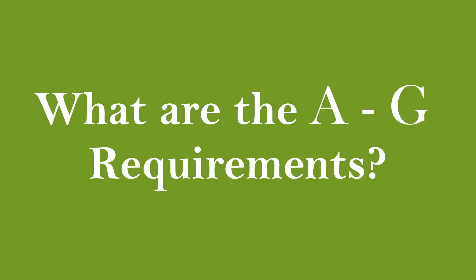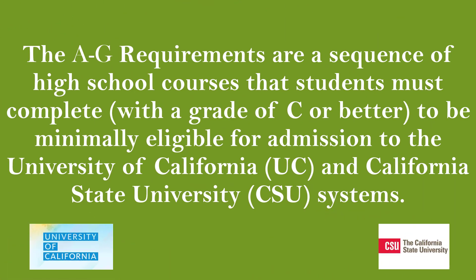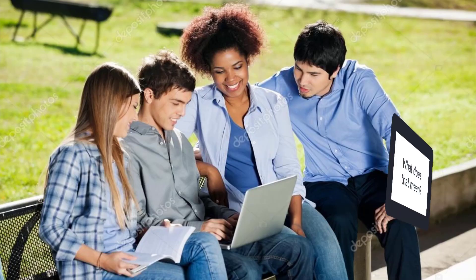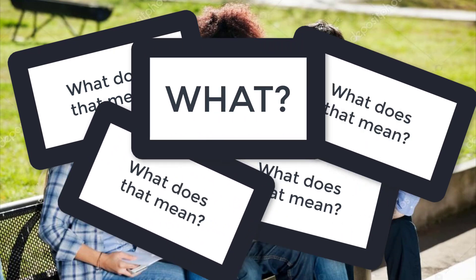What are the A through G requirements? The A through G requirements are a sequence of high school courses that students must complete with a grade of C or better to be minimally eligible for admission to the University of California and California State University systems. This does not guarantee admission. That is the definition of the A through G requirements, but what exactly does it mean for you as a high school student?